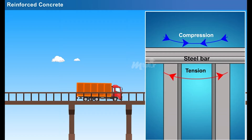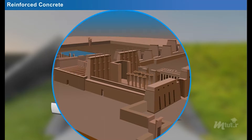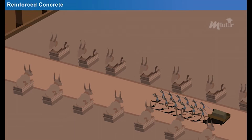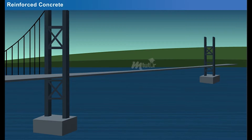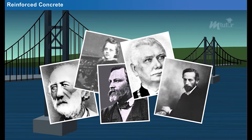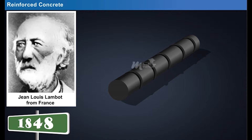The history of concrete goes back to the beginning of human civilization in ancient times. But it wasn't until the recent centuries that man began to reinforce concrete with steel bars. Let us discuss some of the brilliant minds who supported the innovation of reinforced concrete. In 1848, John Louis Lambert from France was the first person to use iron bars and wire mesh to reinforce concrete-lined row boats.